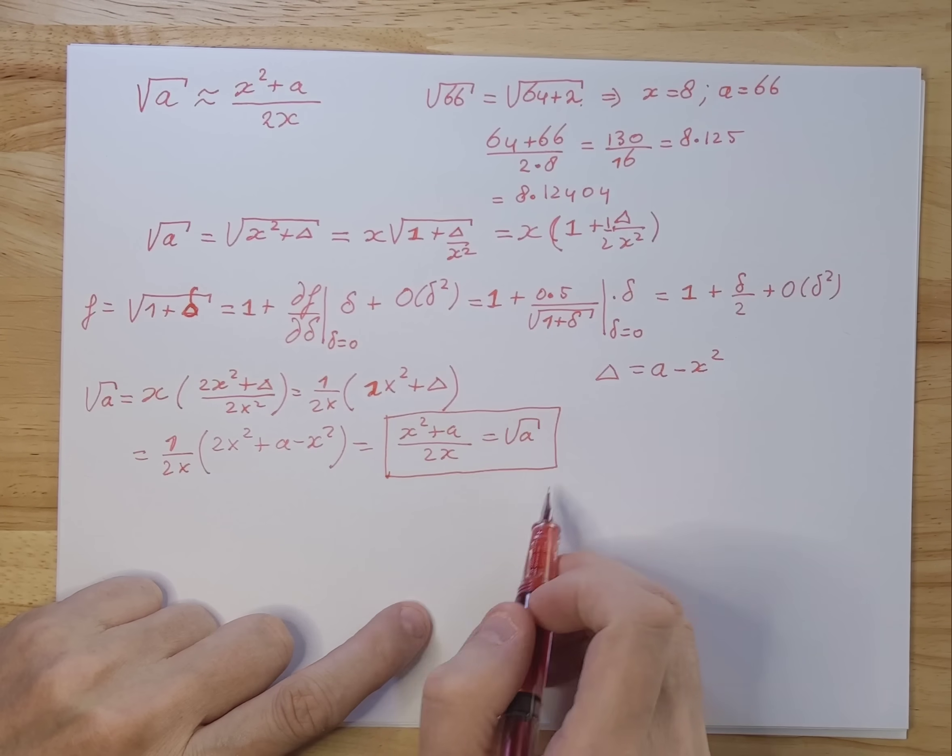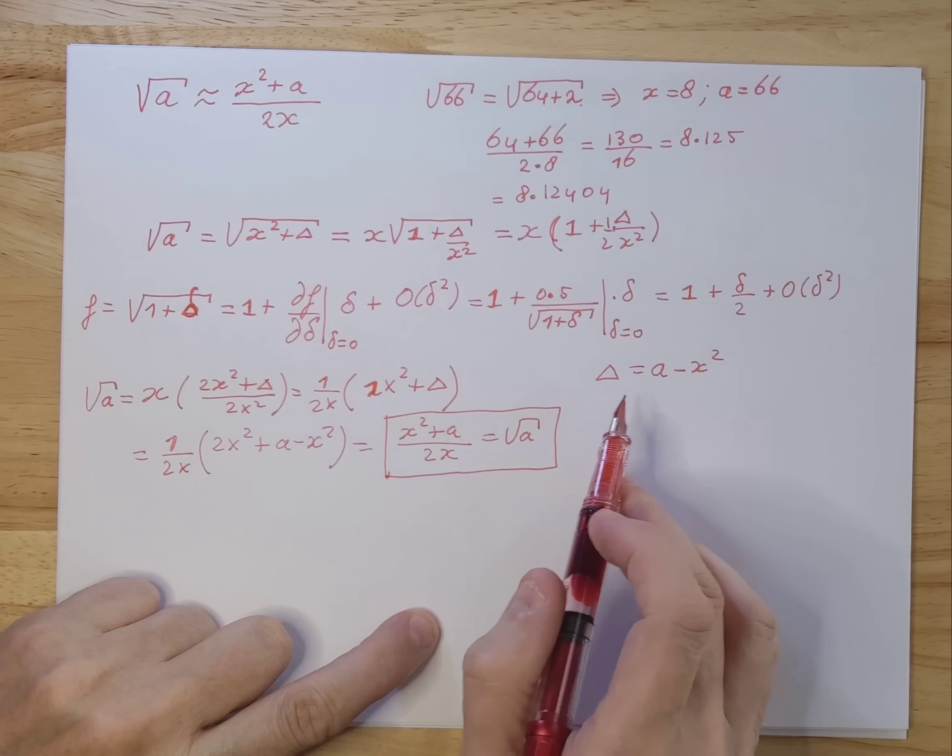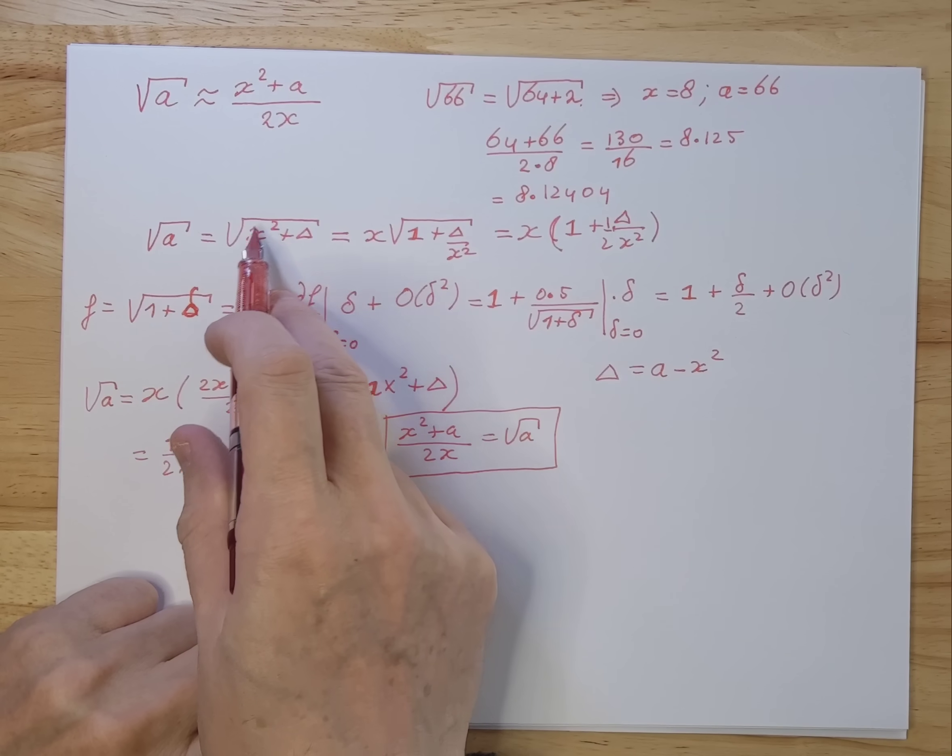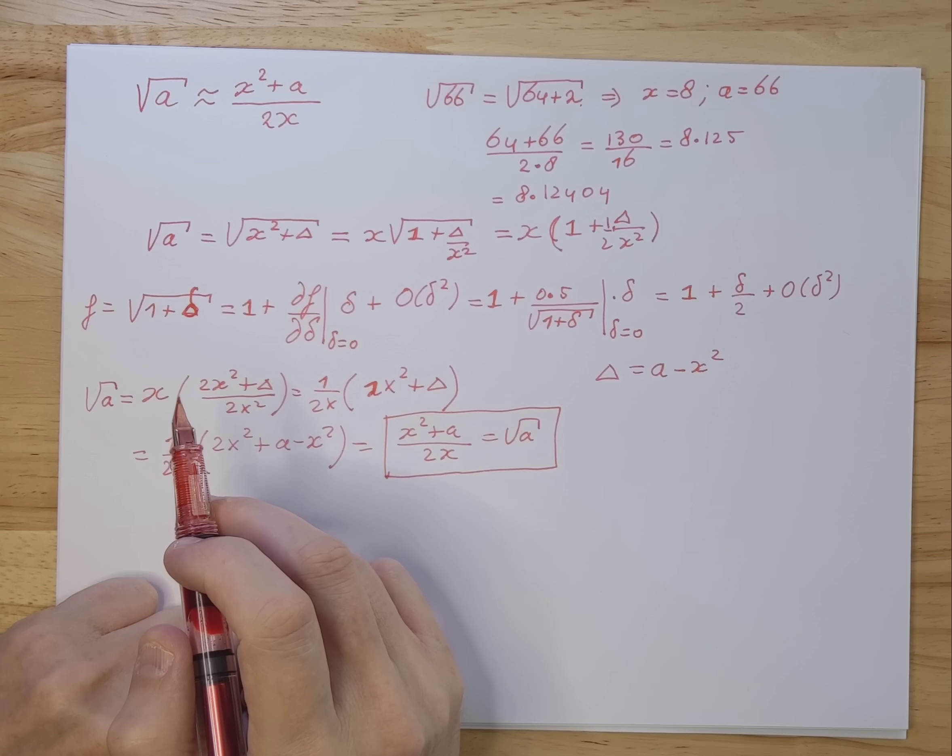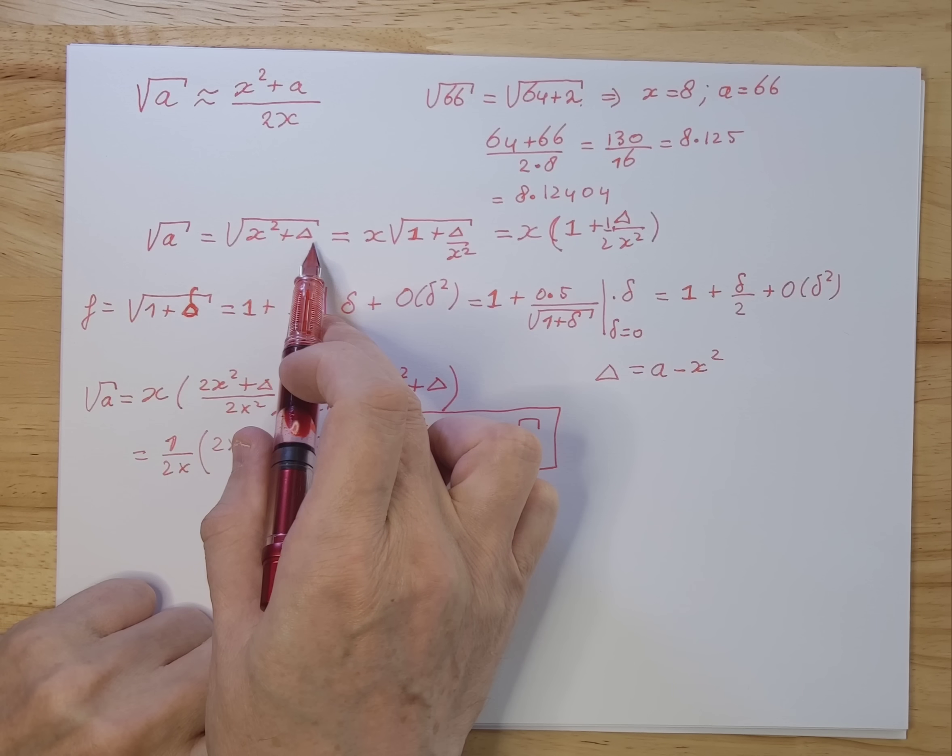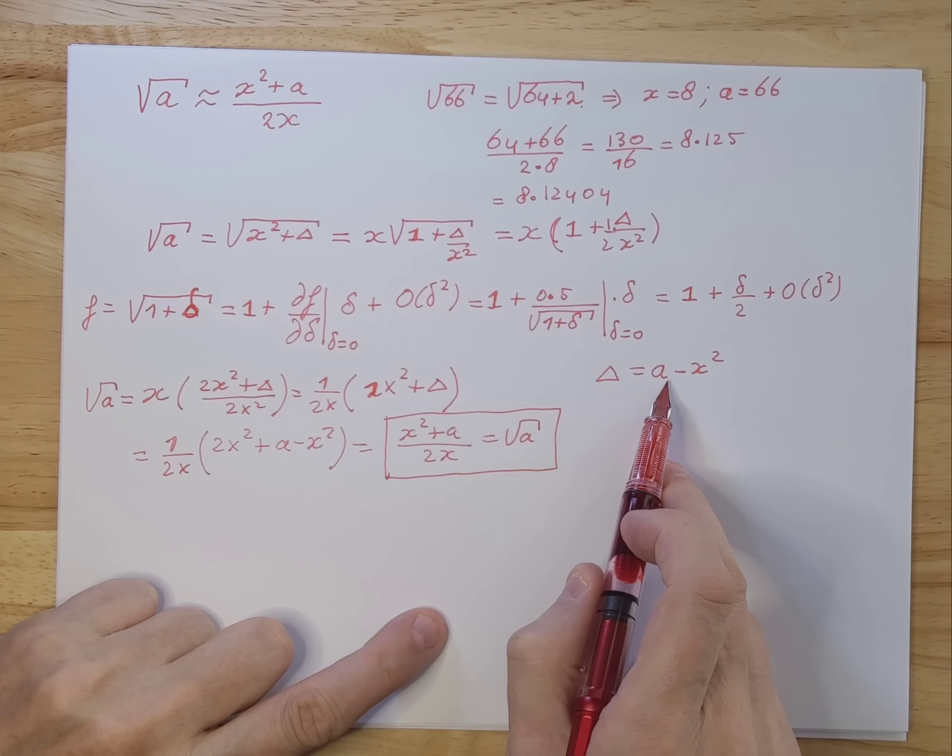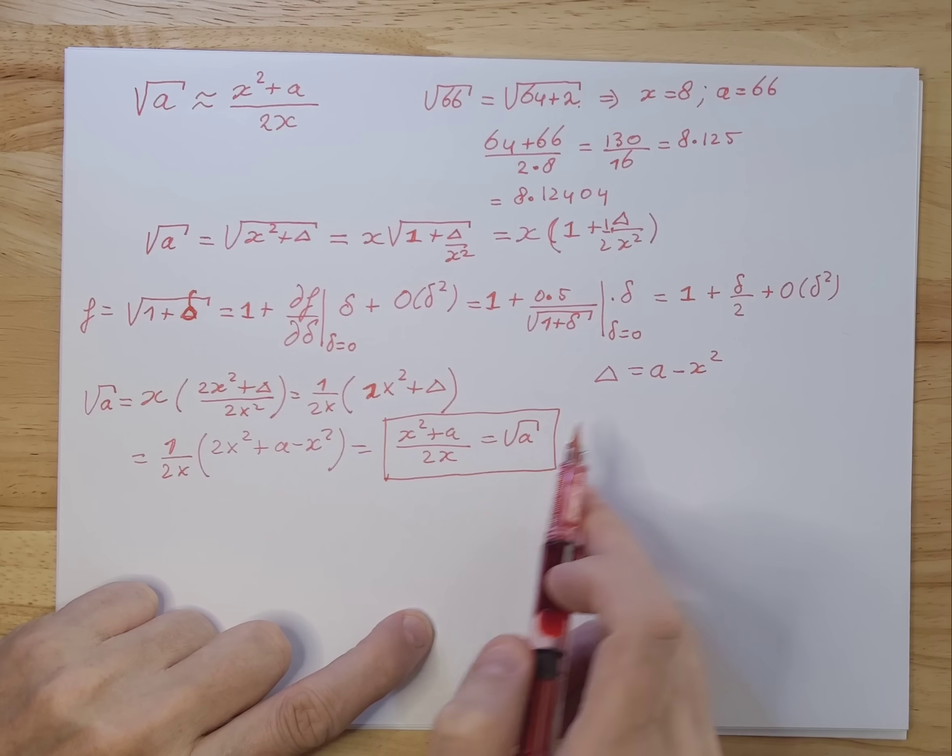Now you might wonder, when you see this, here we assumed that delta is a plus. Delta was a plus here because you had, as an example here, 64 plus 2. So you get a plus. But what if you have 62, for instance? Then you get a minus here. Then you get x squared minus delta. And you have to do the calculation. You get a minus here. But at that point, delta is not a minus x squared, but delta is x squared minus a. So you get the same result if you work that out for the other case. You get exactly this result.